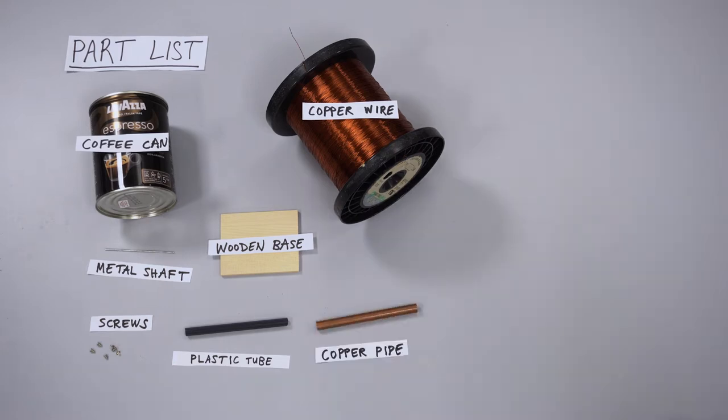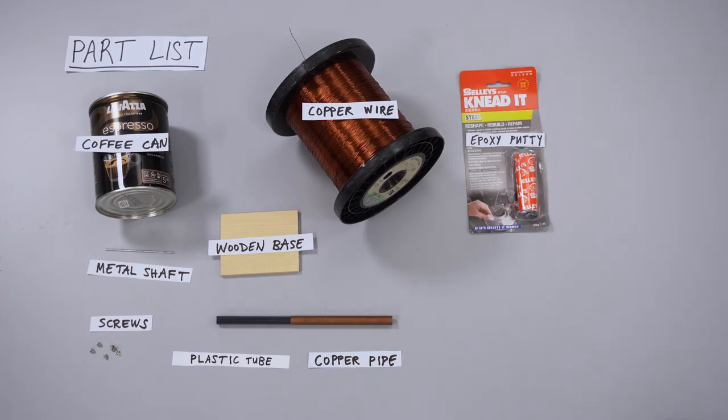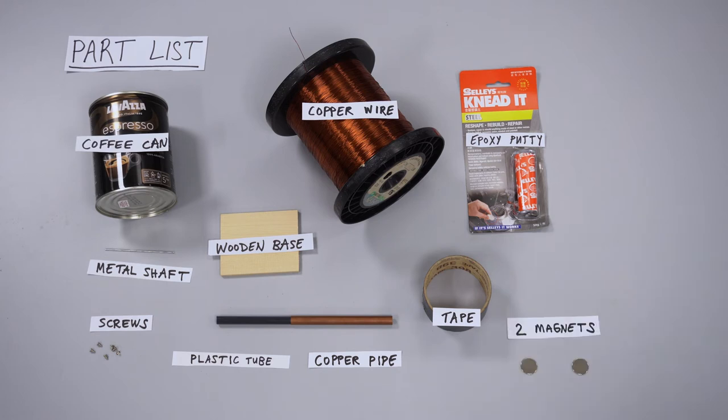You'll also need either some sheet copper or a copper tube about a half millimeter thick. I found copper tubing that's one centimeter inner diameter that can fit snugly around the plastic tube. Then you'll need some epoxy putty that bonds to metal and some insulating tape. You'll need two magnets. Neodymium magnets two centimeters in diameter work well. Finally, you'll need a battery and some clips in order to test it later.